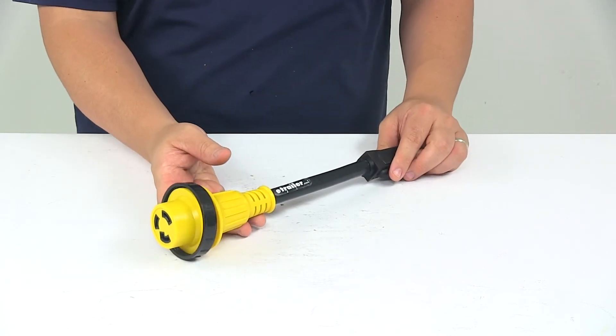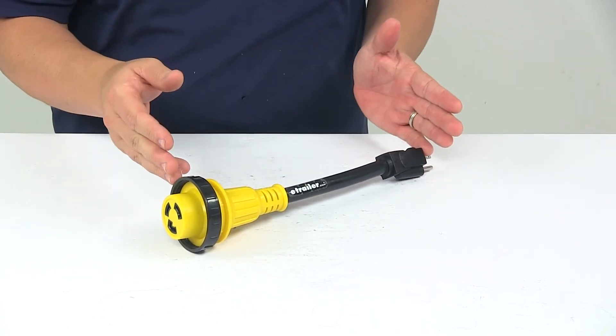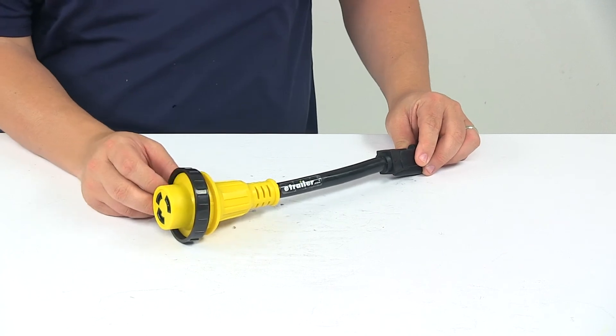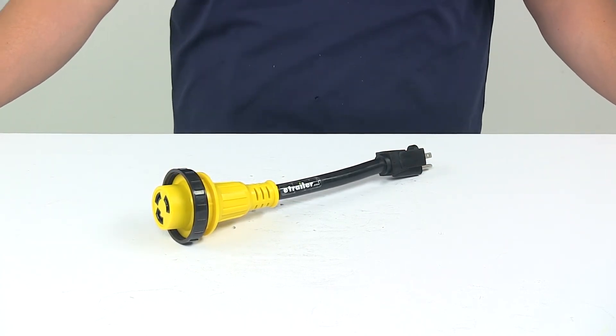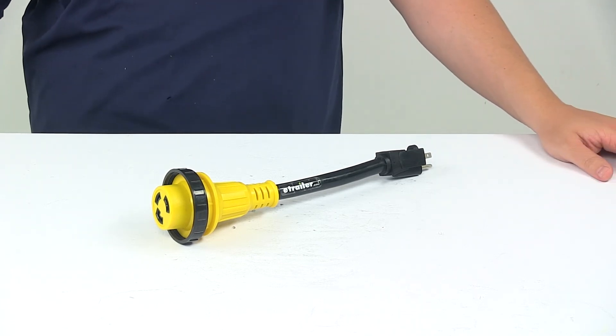When it comes to the voltage we're looking at 120 volts. The length of the unit is about 12 inches long and internally it features gauge 10 wiring. And that's going to do it for today's look at the MightyCord RV power cord adapter.